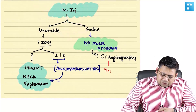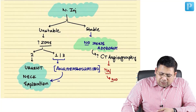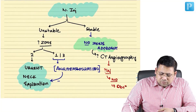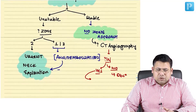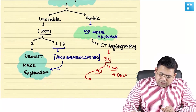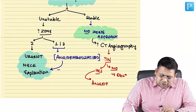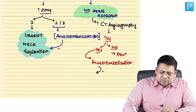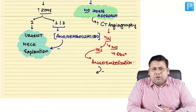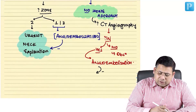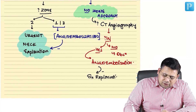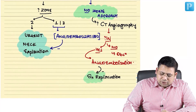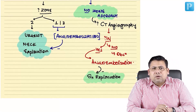On CT angiography, you check for injury. If there is no injury, observation is the management. If injury is found, you perform CT-guided angioembolization. If angioembolization fails, you proceed to surgical exploration.